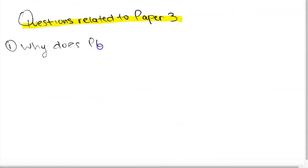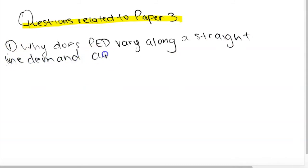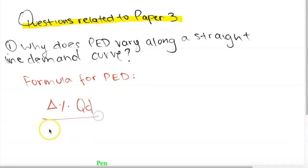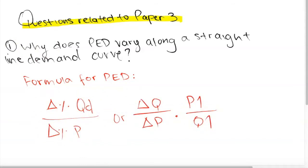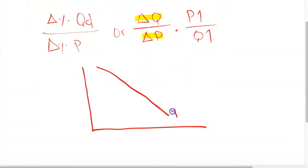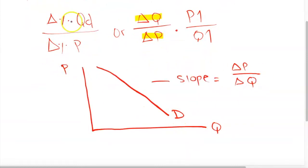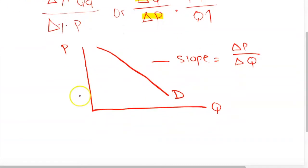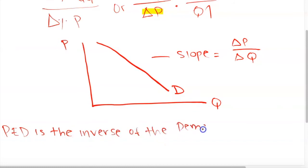Now let's look at a common paper three question: why does PED vary along a straight line demand curve? The easiest way to answer this is to look at the formula. PED equals percentage change in quantity demanded over percentage change in price, which can also be written as the change in quantity over the change in price, times the initial price over the initial quantity. Part of this formula is the inverse of the slope of the demand curve, and the values of P1 and Q1 change according to the point we're at on the demand curve.